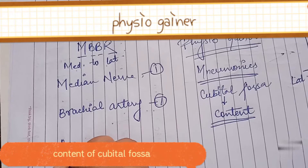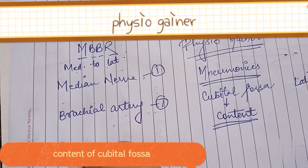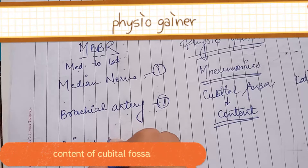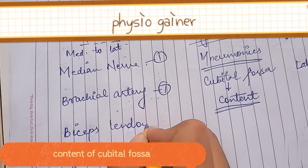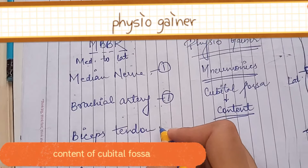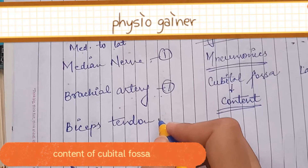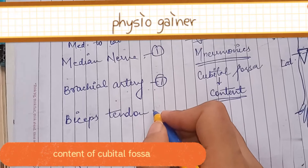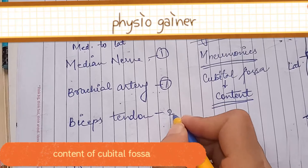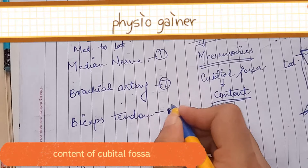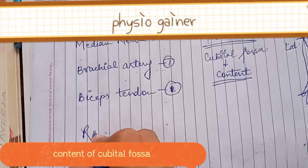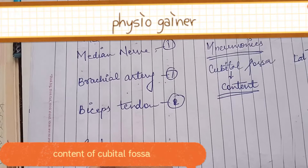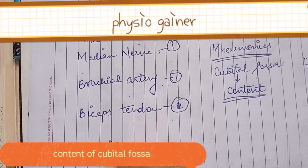B again stands for biceps tendon — not 'raveena' tendon, it's biceps tendon. Now R stands for radial nerve.